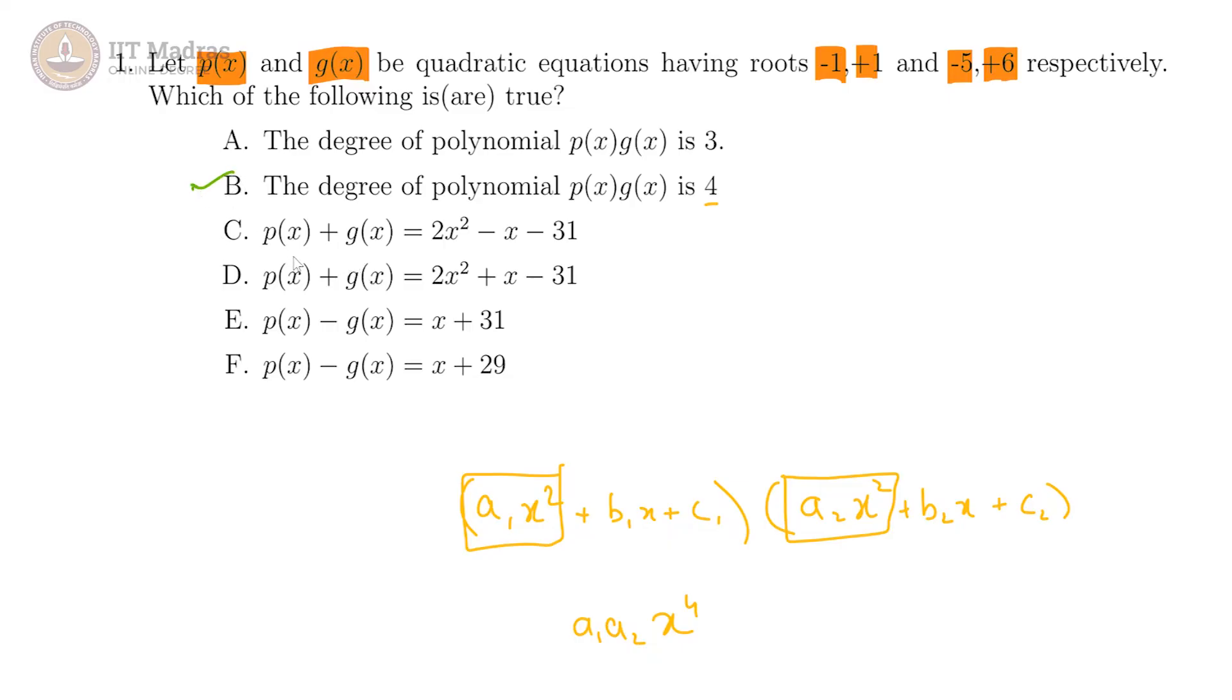And then we have the sum. So we need to find the respective quadratic equations now for this. So this would be x plus 1 into x minus 1, the other would be x plus 5 into x minus 6.